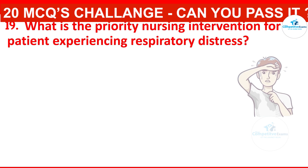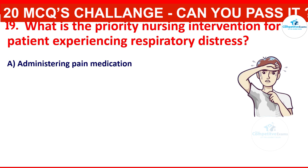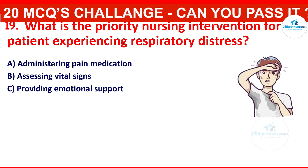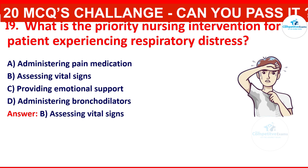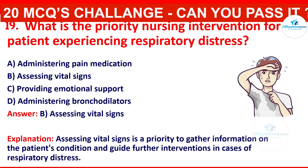What is the priority nursing intervention for a patient experiencing respiratory distress? Your options are: 1) administering pain medication, 2) assessing vital signs, 3) providing emotional support, or 4) administering bronchodilators. The correct answer is assessing vital signs. Assessing vital signs is a priority to gather information on the patient's condition and guide further intervention in cases of respiratory distress.